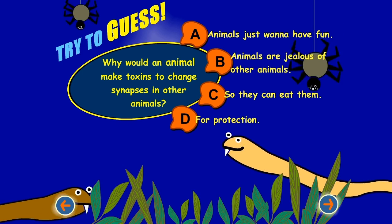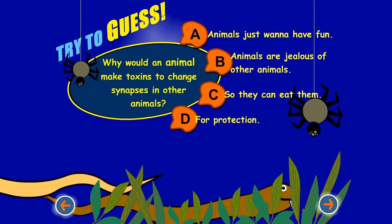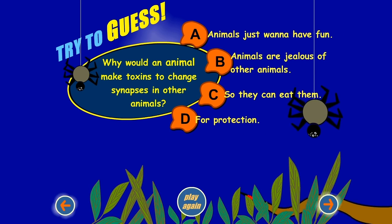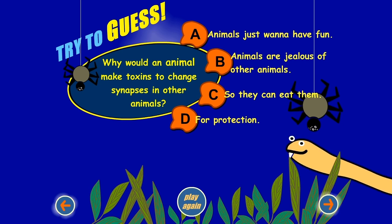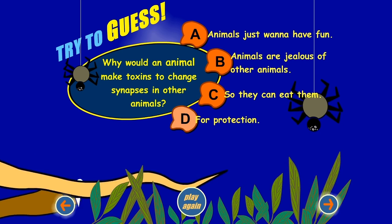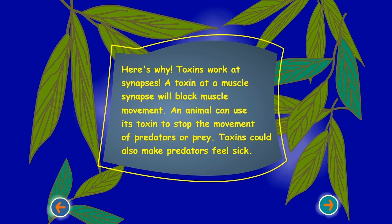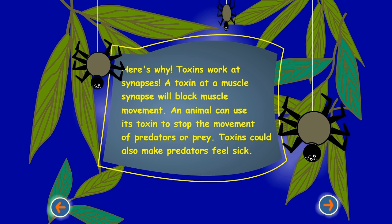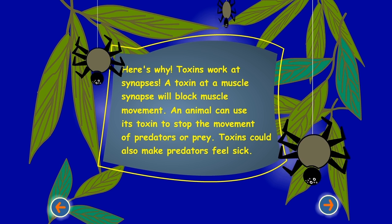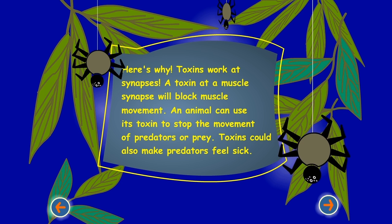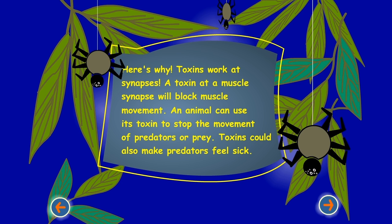Why would an animal make toxins to change synapses in other animals? Here's why: toxins work at synapses. A toxin at a muscle synapse will block muscle movement. An animal can use its toxin to stop the movement of predators or prey.